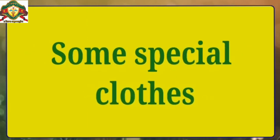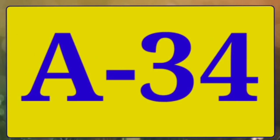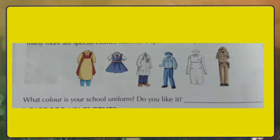The next heading is 'Some Special Clothes.' Different professions have different special uniforms – like when you come to school, you wear a school uniform. Doctors, nurses, lawyers, and police officers all have their own special uniforms. Please come to page number A34 where the question is: What color is your school uniform? Do you like it? Write down this as homework.